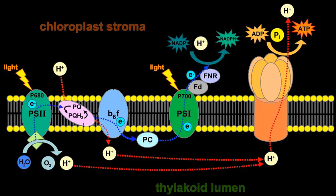The step H₂O → P680 is performed by a poorly understood structure embedded within PSII called the water-splitting complex or the oxygen-evolving complex. It catalyzes a reaction that splits water into electrons, protons, and oxygen: 2H₂O → 4H⁺ + 4e⁻ + O₂.